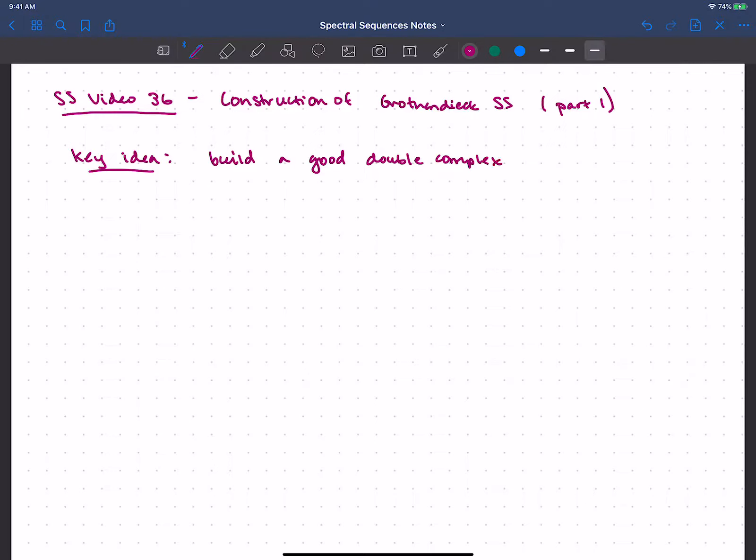so that we get the spectral sequence. And to do that, when we have a double complex, we have two spectral sequences, so the idea is to compare those two spectral sequences - do we take horizontal differentials first, or vertical differentials first.